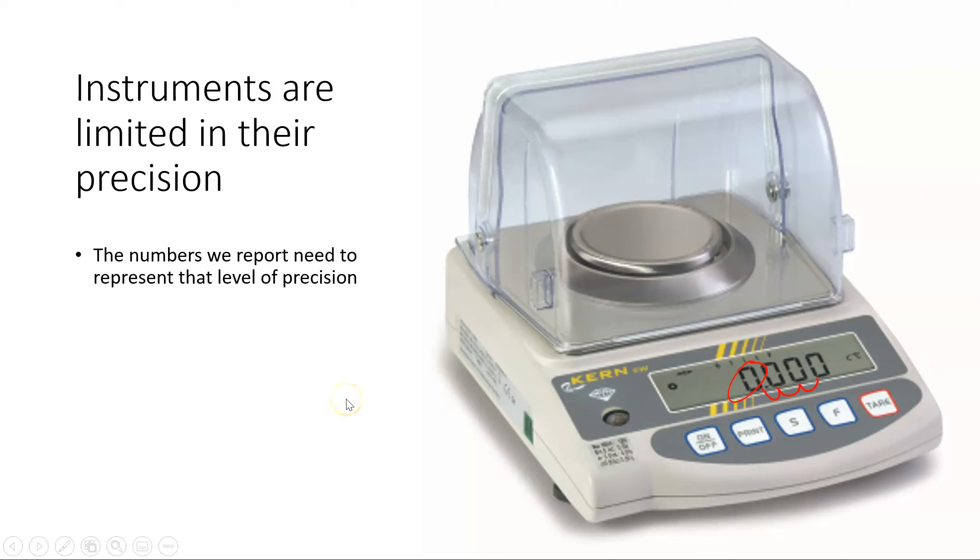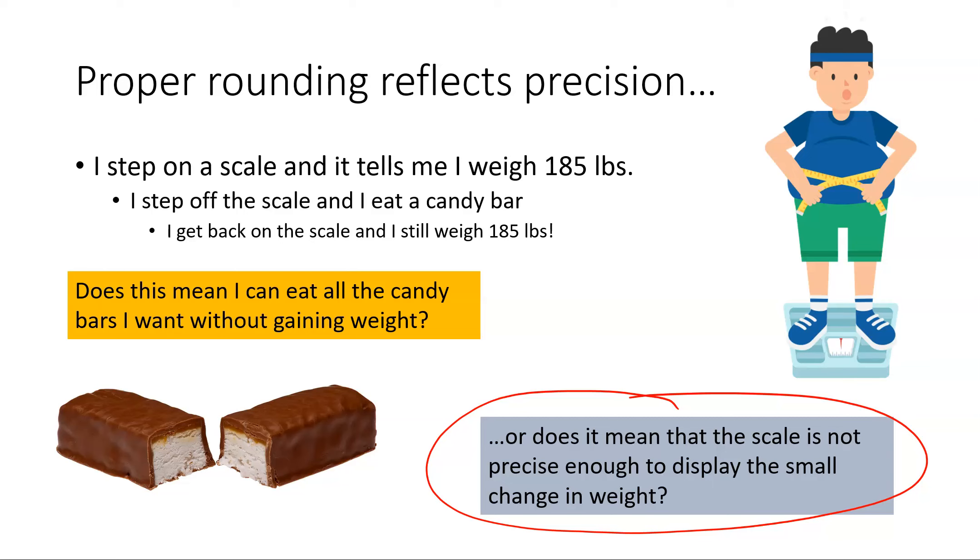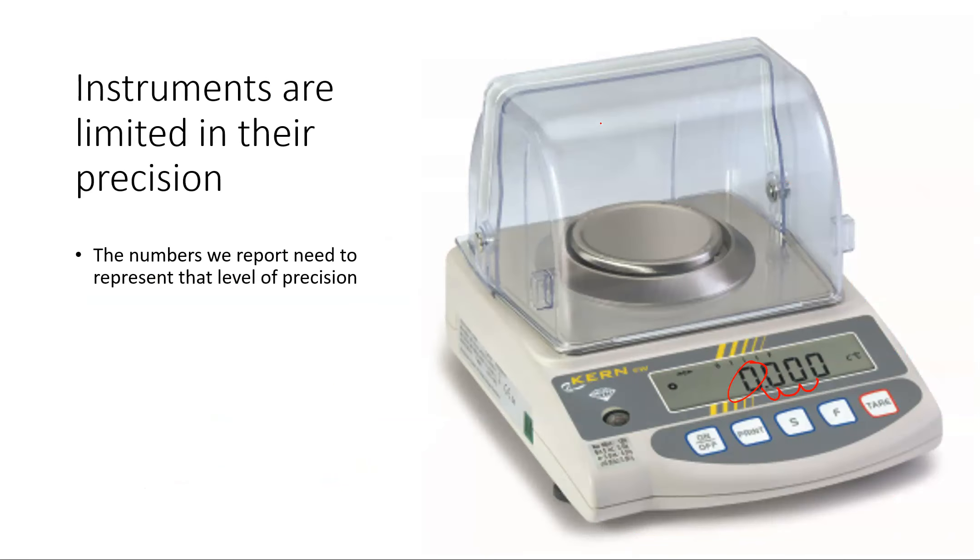So one of the things I'm getting at here is when we report answers or measurements, we need to account for how precise the instrument is. So the balance I was on back here really only told me to the nearest whole pound. This balance goes all the way down to the one one-thousandth of a gram, so this is a much more precise instrument. So the numbers I report in my data can be a lot more precise.